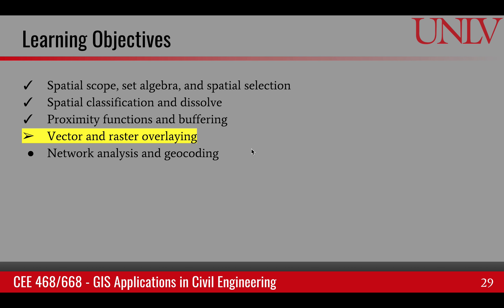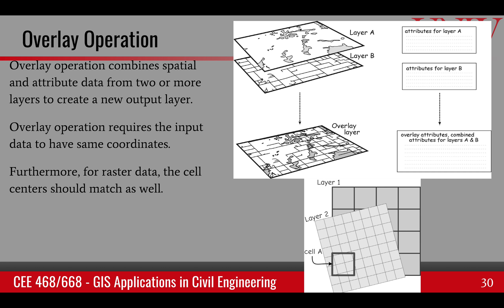The next learning objective is overlaying. Overlaying can be applied to vector as well as raster type data sets. An overlay operation combines spatial and attribute data from two or more layers and creates a new layer and the corresponding attribute data. For example, layer A and layer B are overlaid to each other, and the third layer includes spatial information — the shapes — as well as a combined attribute table for the overlay.